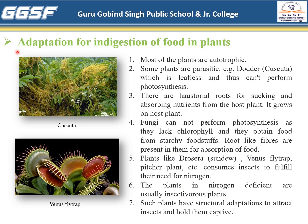The last type of adaptation in plants is adaptation for ingestion of food in plants. Have you ever observed the adaptation in the parts of plants like potato, groundnut, grapevine, beet, bitter gourd, onion, and other plants in your surroundings? You might find that most plants are autotrophic, meaning they prepare their own food. While some plants are parasitic — because they are leafless and can't perform photosynthesis, they depend upon other plants for their food. The plant on which they depend is called the host plant.